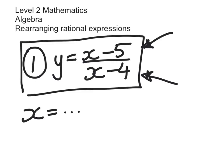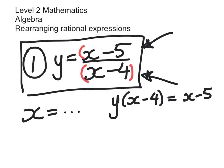We start by getting rid of the fraction. So we multiply both sides by the denominator and we get y times x minus 4 is equal to x minus 5. Now don't forget that there are invisible brackets around both the numerator and the denominator. The next thing we do is we expand the left-hand side. Now that lets us see which terms in the equation have got an x in them.